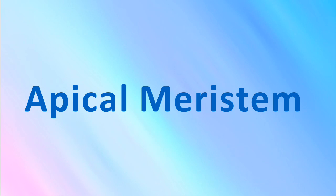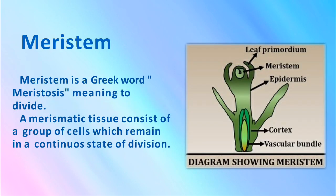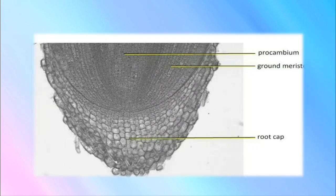Apical meristem. Firstly, I want to tell you about meristem. Meristem is a Greek word; meristosis means to divide. Meristematic tissues consist of a group of cells which remain in a continuous state of division. You can observe here in the diagram meristematic activity showing procambium, ground meristematic tissues, and root caps.